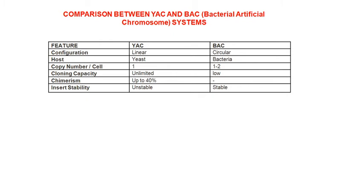Now, a comparison between YAC and BAC — that is bacterial artificial chromosome. The configuration of YAC is linear, while a bacterial plasmid is always circular. The host of YAC is yeast, though sometimes bacteria; for BAC, only bacteria is the host. YAC is a low copy number vector, while BAC is a high copy number vector. The cloning capacity of YAC is virtually unlimited, while BAC is very low. Regarding chimerism, up to 40 percent of the size of the vector can be cloned in the YAC system, but chimerism is not possible in BAC. Insert stability is unstable in YAC but quite stable in BAC.